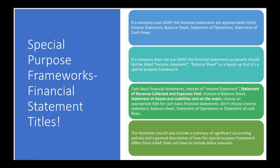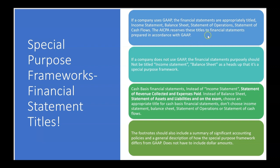What about financial statement titles when you use a special purpose framework? If a company uses GAAP, the financial statements have to be appropriately titled — income statement, balance sheet, statement of operations, statement of cash flows. But the AICPA reserves these titles for financial statements prepared in accordance with GAAP. So if a company does not use GAAP, the financial statements purposely should not be titled income statement or balance sheet, as a heads-up that it's a special purpose framework.